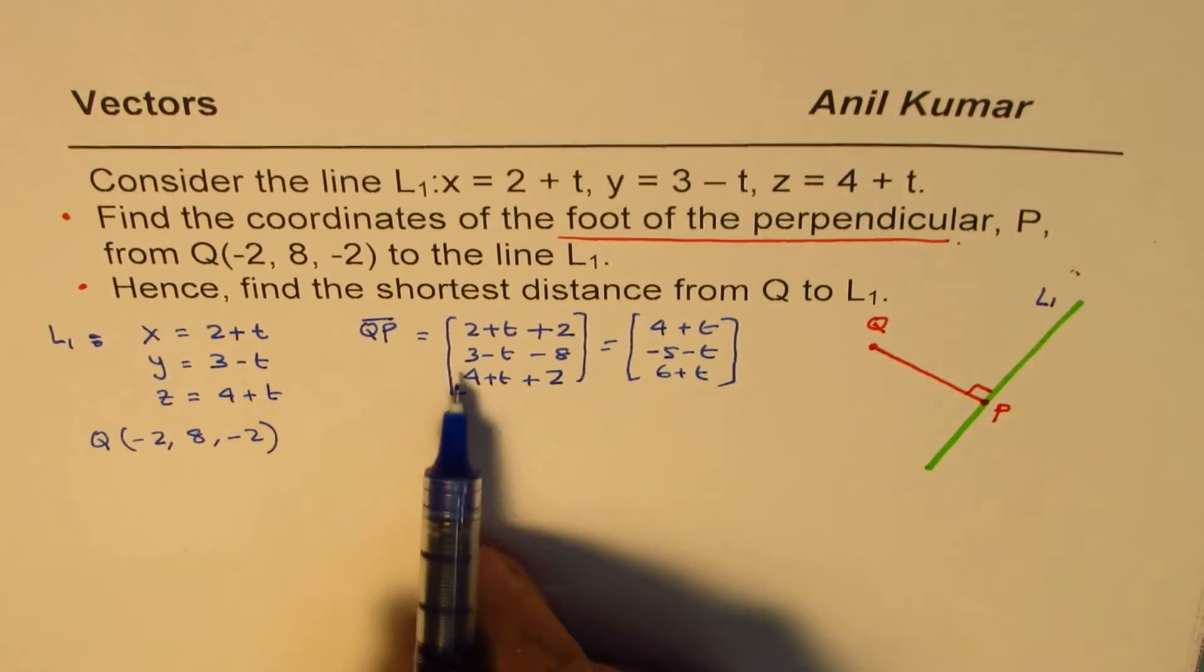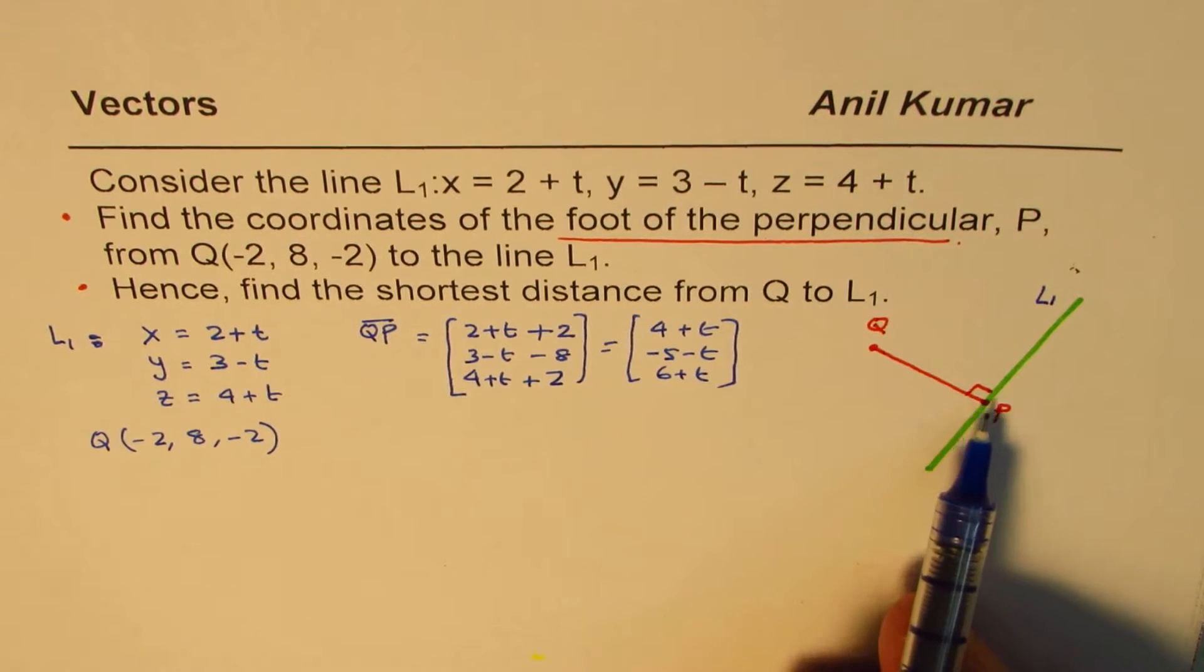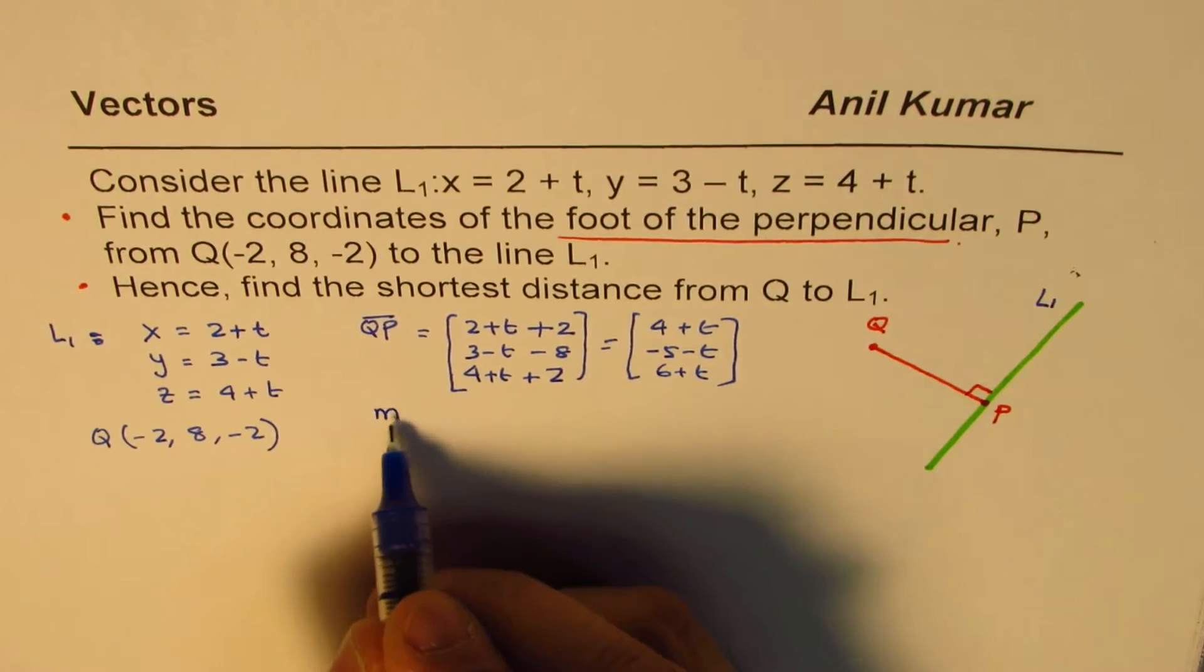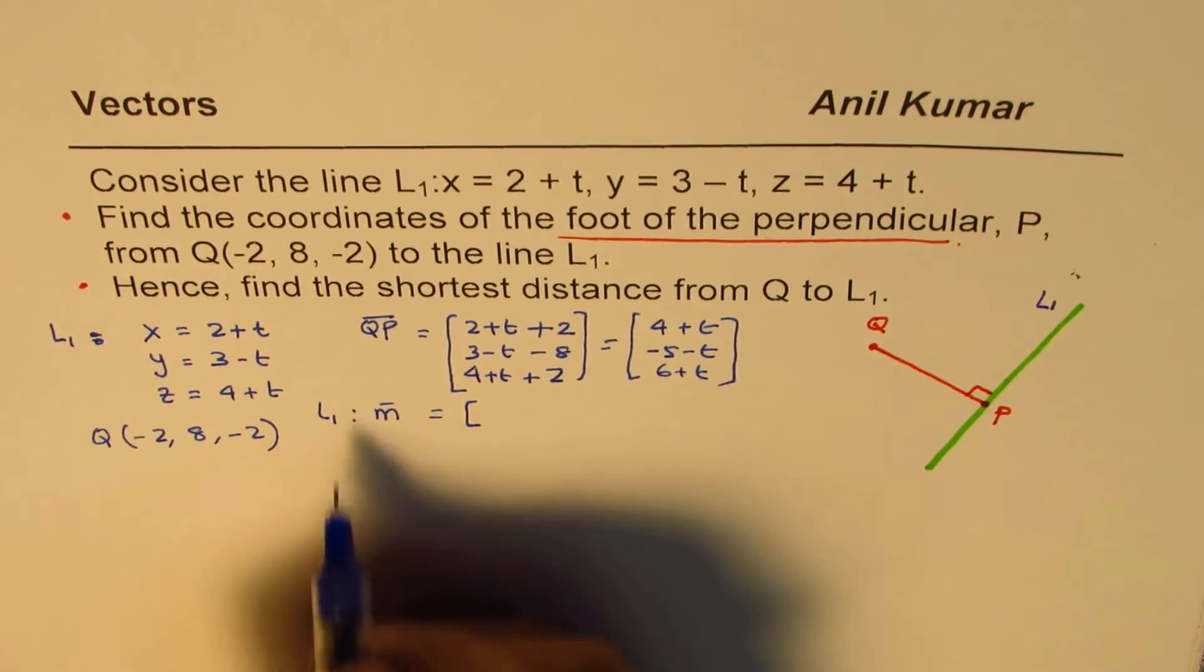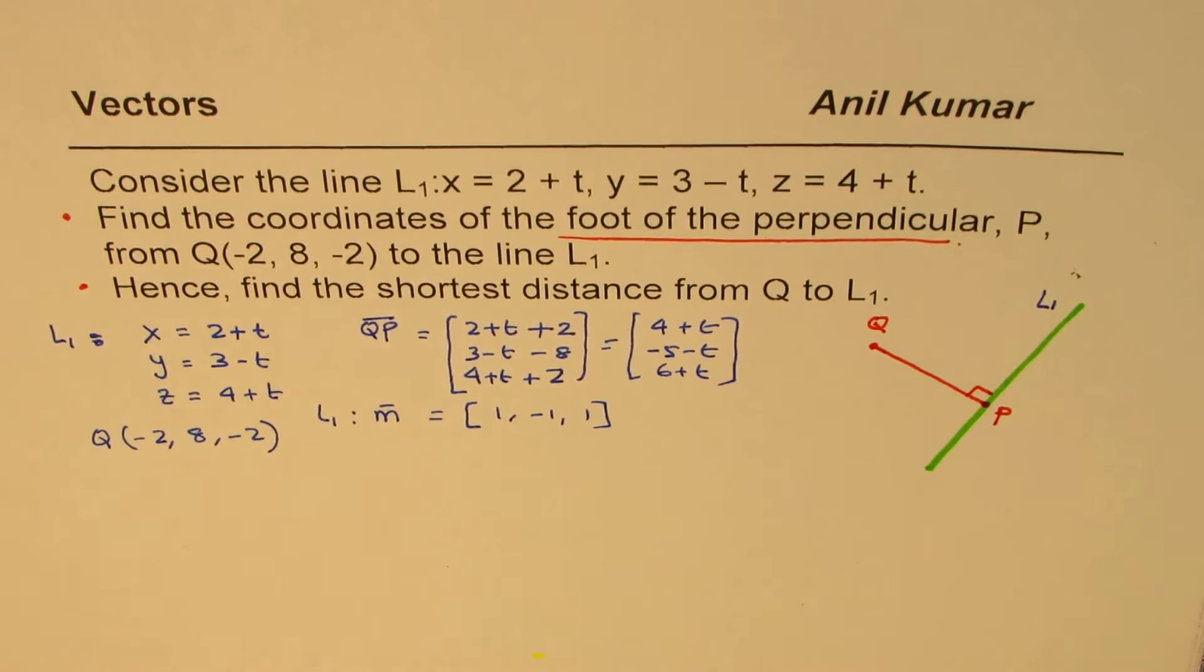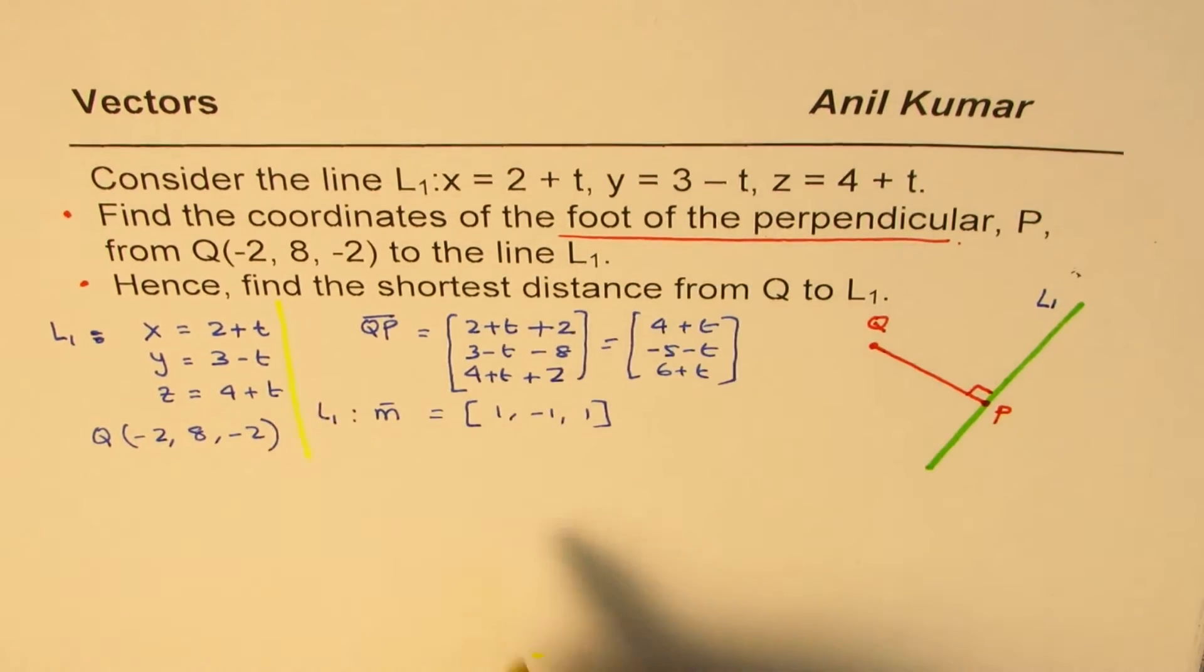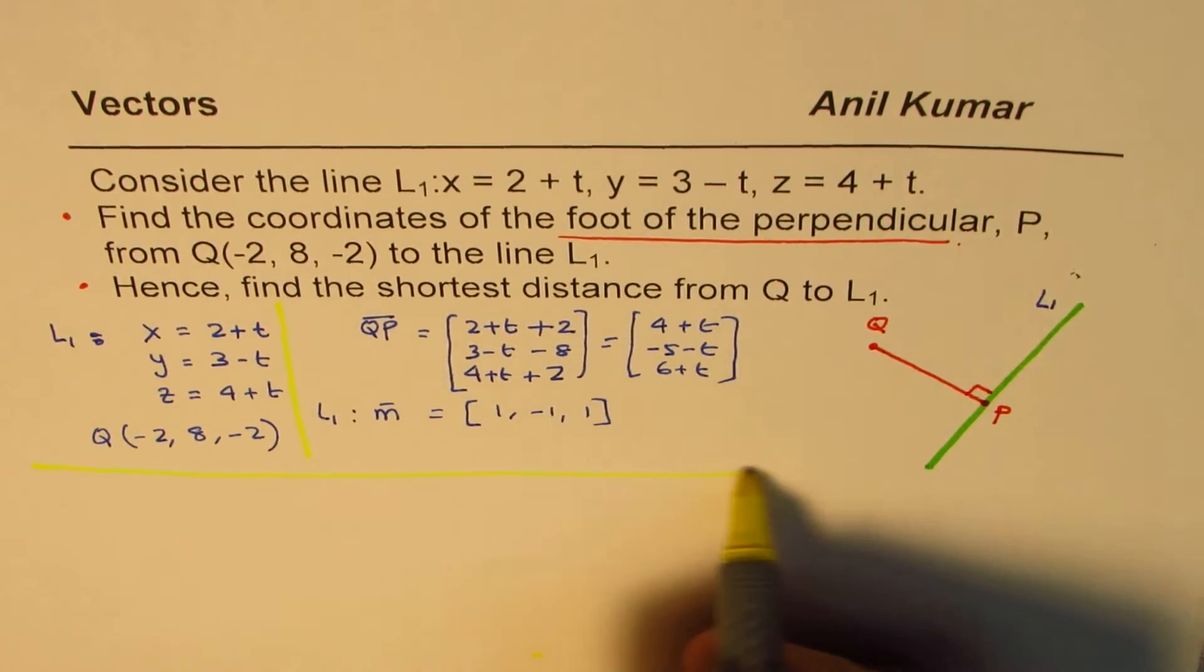Now, when QP is perpendicular to the line, then dot product of their directions should be 0. We'll do that later. Let's find the direction first for the line. So for the line L1, the direction vector is (1, -1, 1). So that is the direction vector. Let me separate this out. So we know this information.